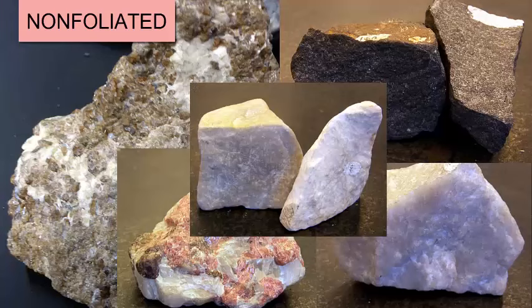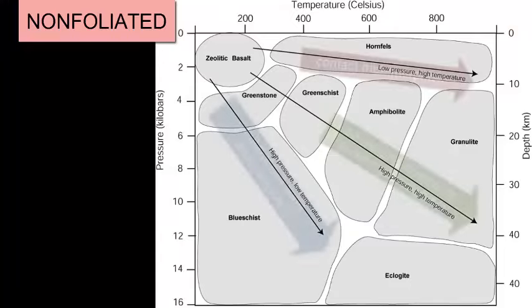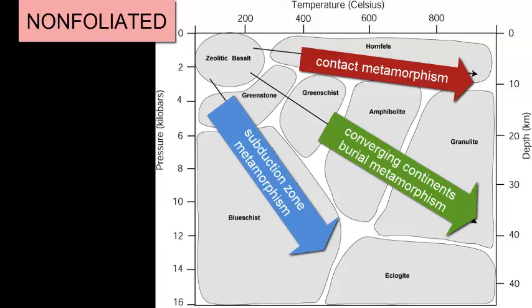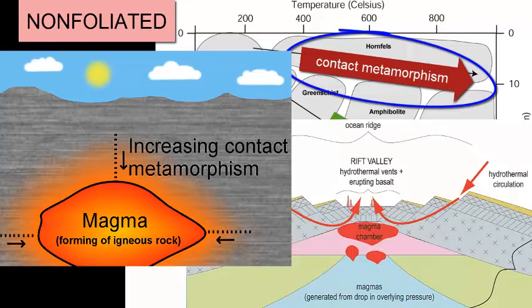Now let's go to the non-foliated rocks. If these contain minerals that could foliate but haven't, then what do we know? The rock has not been subjected to high pressures. The only metamorphic settings in which there is little to no increased pressure are contact metamorphism — heating up rocks around a magma chamber — and hydrothermal metamorphism, hot waters percolating through cracks or pores in the rock.